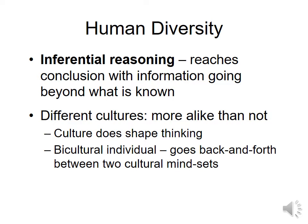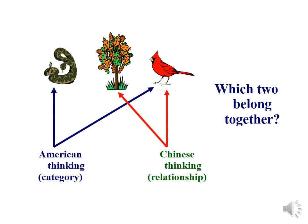Different cultures think differently, and language shapes the way we think — that's the Benjamin-Whorf hypothesis, also called the linguistic relativity hypothesis. If language is at the base of culture, culture shapes thought. People raised biculturally can go back and forth between two different thought processes. Cultures also influence how we assume categories and relationships: Americans given a snake, a bird, and a tree will group them as plants and animals (categories), while Chinese participants would pair the bird and tree together because the bird lives in the tree (relationships). Where we grow up and our culture influence how we think.